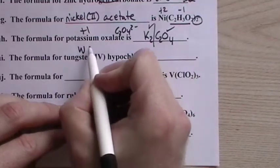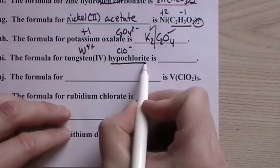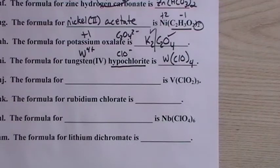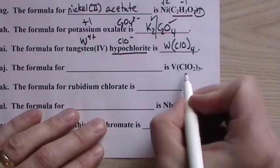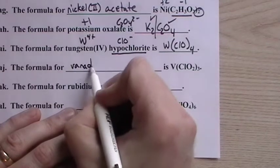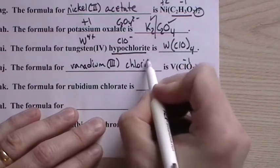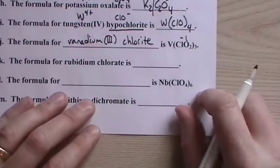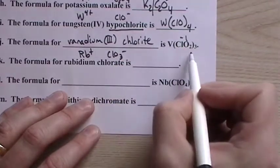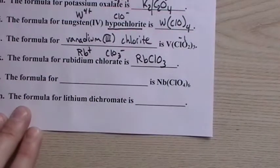Tungsten is W and it's plus, that's a 4, so plus 4. Hypochlorite is ClO minus. So you're going to need 4 of these to balance out the charge on the tungsten. Then we have vanadium, and then this is chlorite. This was hypochlorite, now we have 2 oxygens here, so it's chlorite. So this is vanadium, and we need to know the charge. This is minus 1, so this would be plus 3. Vanadium(III) chlorite. And as you'll see, I'm going through every polyatomic ion in the book. Rubidium, Rb, plus 1. Chlorate, ClO3 minus. So ClO, ClO2, ClO3. So we have rubidium is plus 1, so we only need one of the polyatomic ions there.